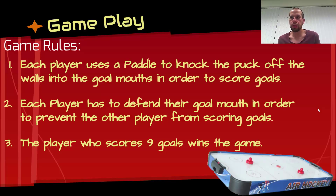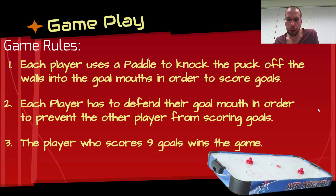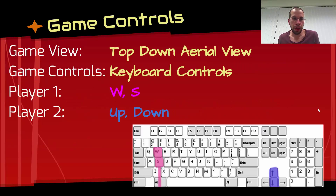The gameplay section covers the game rules - a breakdown of the game itself. You typically want to outline the rules as simply as possible. Each player uses a paddle to knock the puck around and off the walls in order to score goals, while defending their own goal mouth. The player that scores nine goals first will win the game.